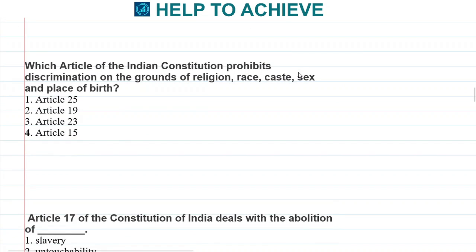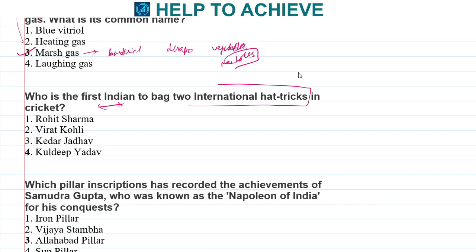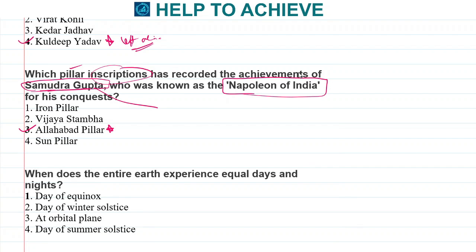Which article of the Indian Constitution prohibits discrimination on the grounds of religion, race, caste, sex? It's about equality and no discrimination. This is mentioned in Article 15 of the Constitution.